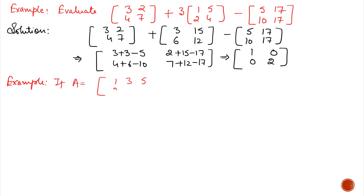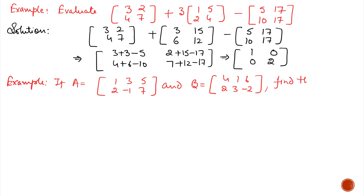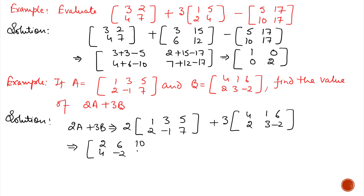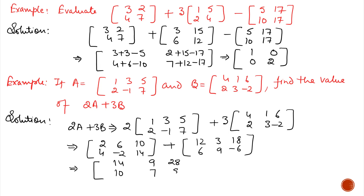Next example: matrix A is given of order 2×3 — 2 rows and 3 columns. Another matrix B is given, also of order 2×3. Find the value of 2A + 3B. First multiply matrix A by 2 and matrix B by 3, then add. We get [2, 6, 10; 4, −2, 14] + [12, 3, 18; 6, 9, −6], and after addition we get [14, 9, 28; 10, 7, 8] — a 2×3 matrix with 2 rows and 3 columns.